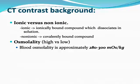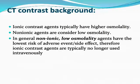We can also divide CT contrast based on osmolality, relative to blood osmolality, as high or low. The osmolality of blood is approximately 280 to 300 milliosmoles per kilogram. Ionic contrast agents typically have higher osmolality. Non-ionic agents are considered low osmolality, though their osmolality is still typically higher than blood.